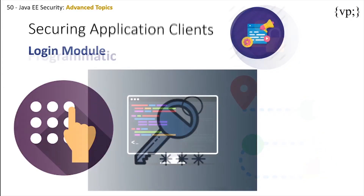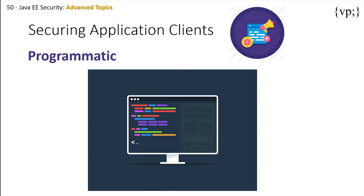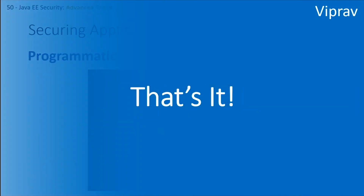Or you can use programmatic ways to secure your application clients if the previous methods don't suit your needs. And that's it — that's all there is about the advanced topics on Java EE security. In the next chapter, we'll be taking a look at transactions and all the stuff that supports Java EE. Until then, I will see you in the next video.